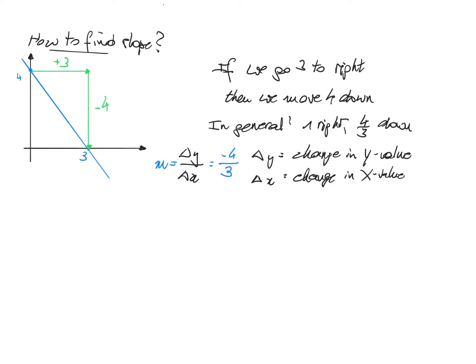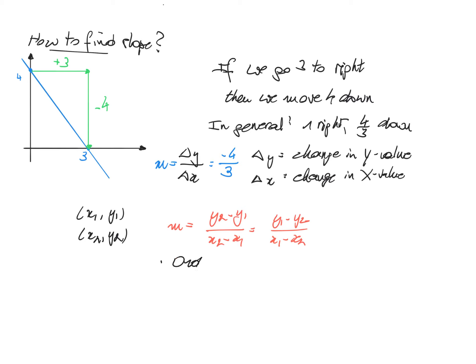If we want to write the formula more generally, suppose we have two points x1, y1 and x2, y2. Two points define a line, so with two points we can find the slope. The slope m is then the change in y, so it is y2 minus y1 divided by the change in x, which is x2 minus x1. This is also equal to y1 minus y2 divided by x1 minus x2 — the order of the points is irrelevant.